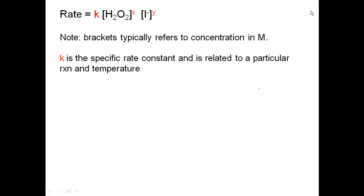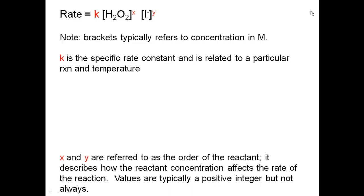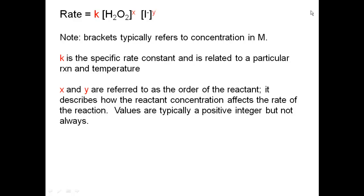k is a specific rate constant related to a particular reaction at a particular temperature. x and y are referred to as the order of the reactant — they describe how the reactant concentration affects the rate. These values are typically positive integers, but not always; they can be negative or fractions. Typically in lecture you encounter whole numbers 0, 1, 2, or 3. However, in lab we're probably going to get some strange numbers due to the apparatus we're using.